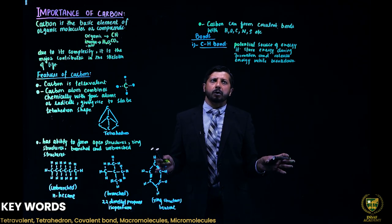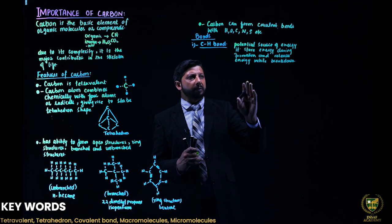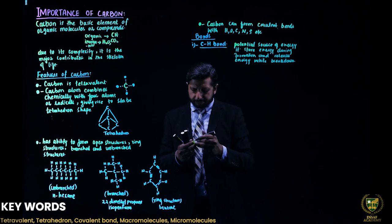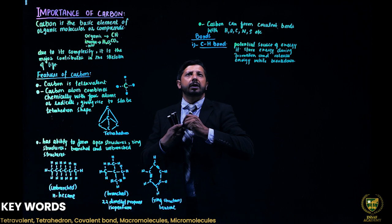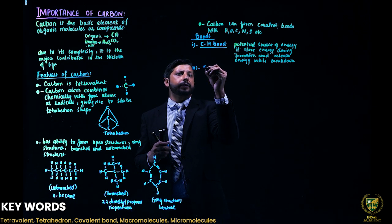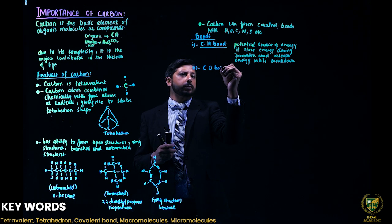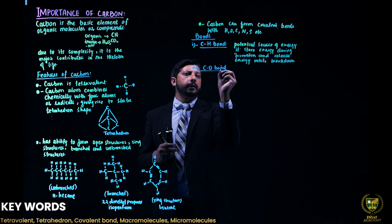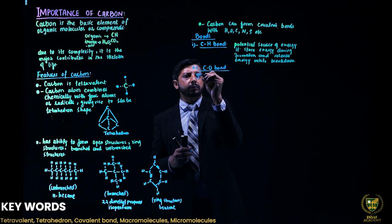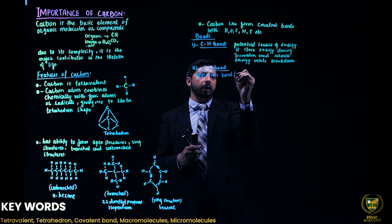It is the potential source of energy and releases energy while breakdown. So the carbon-hydrogen bond is the potential source of energy. When the bond is broken, the energy stored in this bond is released. When carbon combines with oxygen, it forms carbon-oxygen bond.